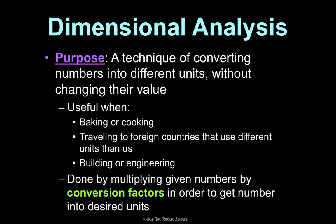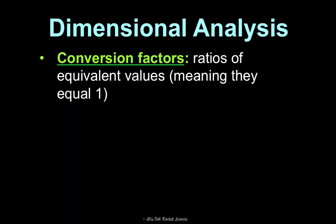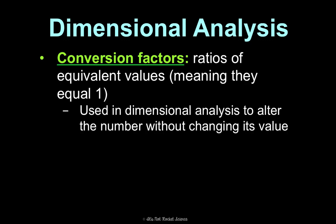We accomplish this by multiplying given numbers by conversion factors in order to get our number into desired units. I've been mentioning conversion factors in the metric conversion notes, but now let's get a definition in our notes. They are ratios of equivalent values, meaning they equal one. That's why we're able to use them to convert units without changing the value of the measurement.